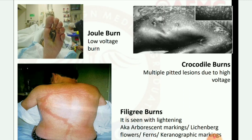Next images are burn images. Joule burn — low voltage burn. Crocodile burns — multiple pitted lesions due to high voltage. Filigree burns — seen with lightning, also known as arborescent markings, Lichtenberg flowers, fern pattern, and keraunographic markings.